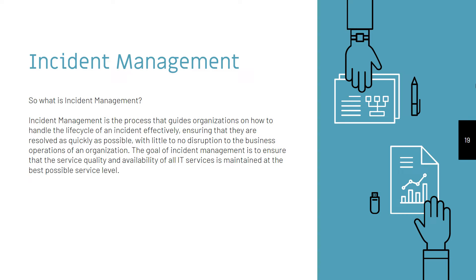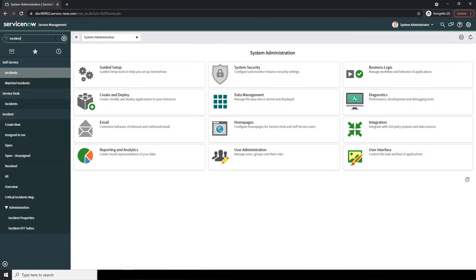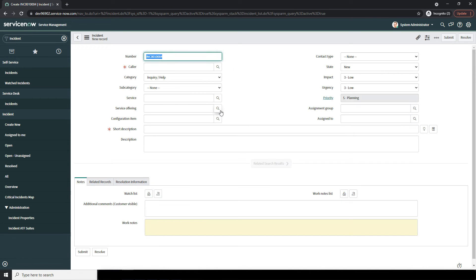Now that we've covered what incident management is and what an incident is, let's go into ServiceNow and create one. For today's demo, we're going to create an incident for the WiFi being down in an office. In order to create an incident in ServiceNow, you'll need the admin, sn-incident-write, or ITIL role associated to your user account. Open up ServiceNow, go into the application navigator and type in incident. Under the incident application, click on the Create New module and a blank incident form will load.